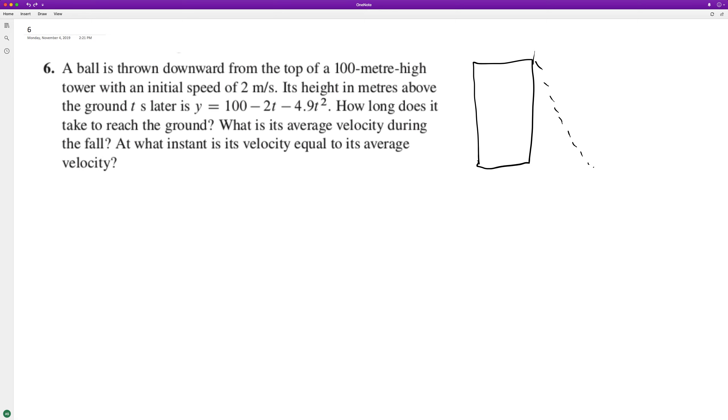To find how long it takes to reach the ground, we set the equation equal to zero: 100 - 2t - 4.9t^2 = 0. Using the quadratic equation, we get a negative value and a positive value. We use the positive value, which comes out to approximately 4.318 seconds.